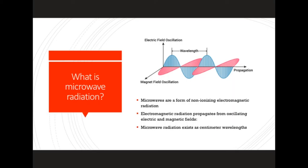First we're going to go over what is microwave radiation. Microwaves are a form of non-ionizing electromagnetic radiation. Electromagnetic radiation propagates from oscillating electric and magnetic fields.